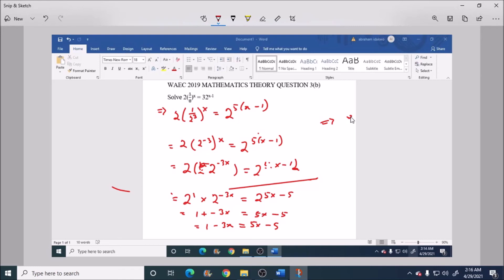Equals to 8x. Now dividing both sides by 8, we have 6 over 8 equals to 8x over 8. So x is equal to 6 over 8, which is also equals to 3 over 4. So x is equal to 3 over 4.